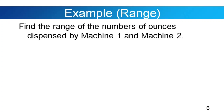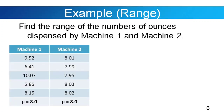Let's have an example. Find the range of the number of ounces dispensed by machine one and machine two. We have a table — machine one and machine two are soda dispensers. In machine one, we have five values: 9.52, 6.41, 10.07, 5.85, and 8.15 ounces. The average value dispensed by machine one is mu equals 8.0.